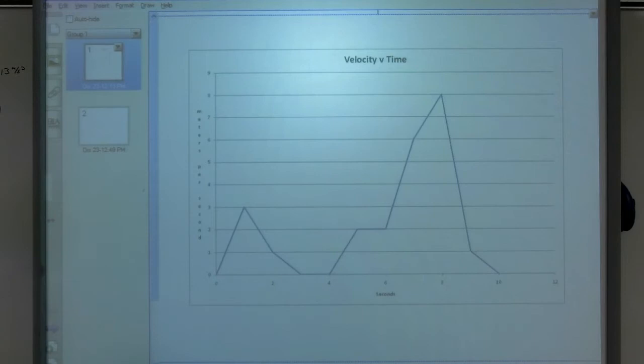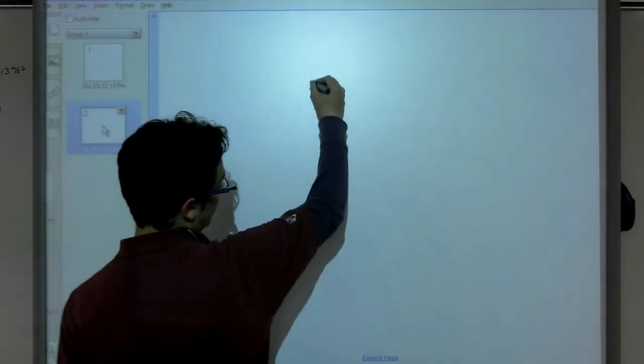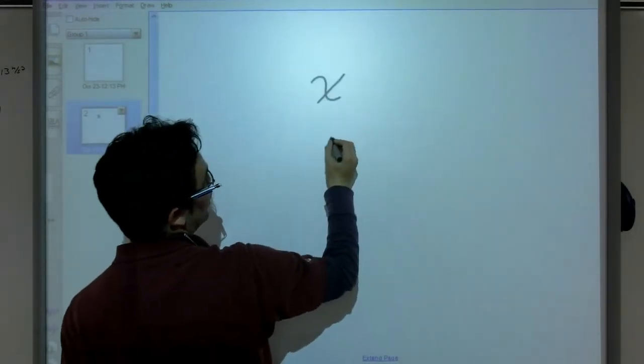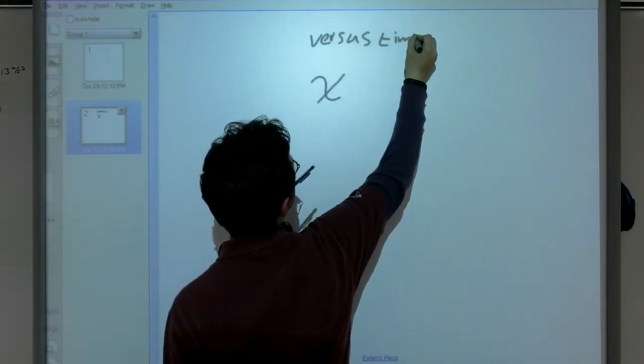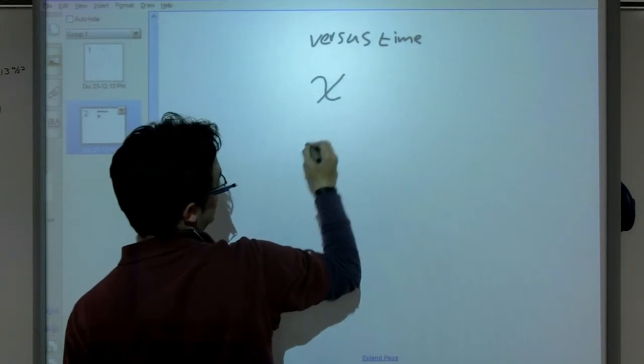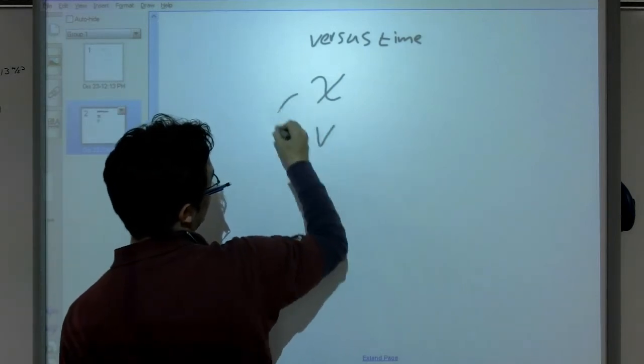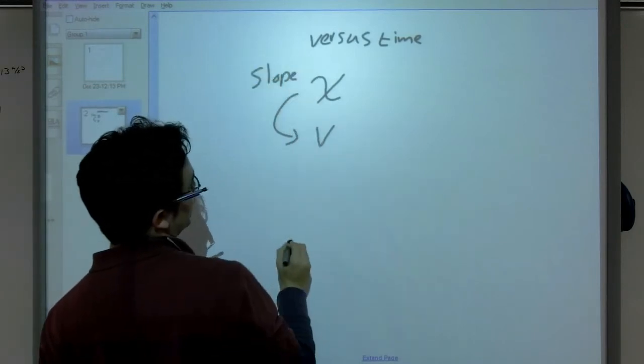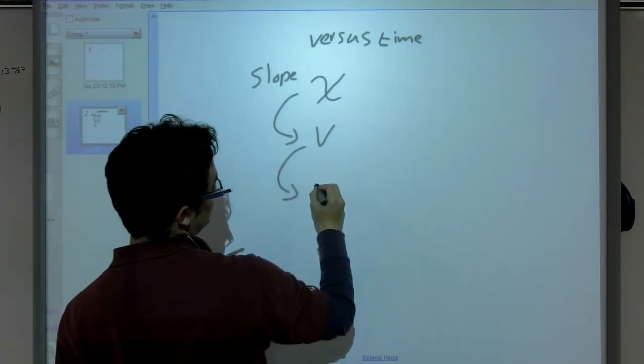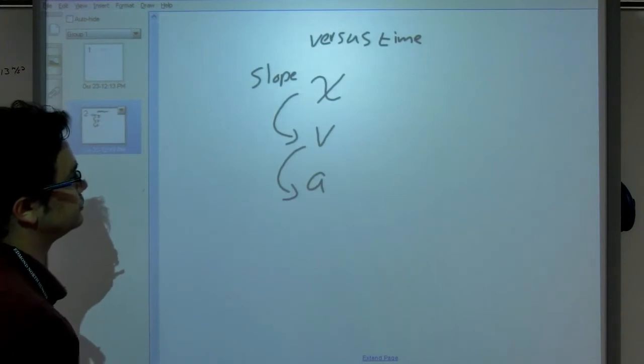Now, one of the important things to remember are what we can tell from each of the types of charts. So what I've laid out before, if I've got a position versus time graph, these are always versus time. If I have a position versus time, I can find my velocity by looking at the slope at a given point. I can also go from a velocity versus time to the acceleration by looking at the slope.